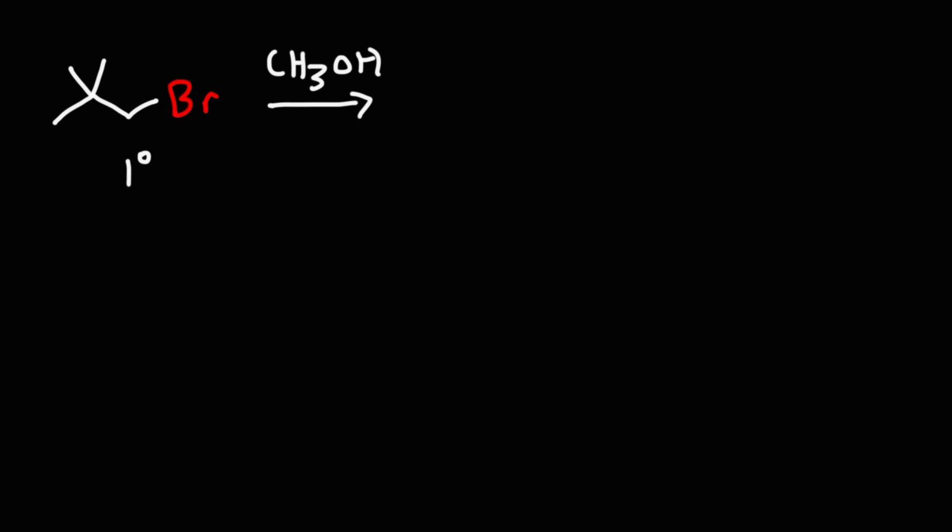But the SN2 reaction could work here. If we were to draw it, the methanol could attack the carbon from the back, kicking out the leaving group. In this case, we'll get this oxonium species. And then we'll use another methanol molecule to get rid of the hydrogen. So the end result is that for the SN2 mechanism, we'll get this product.